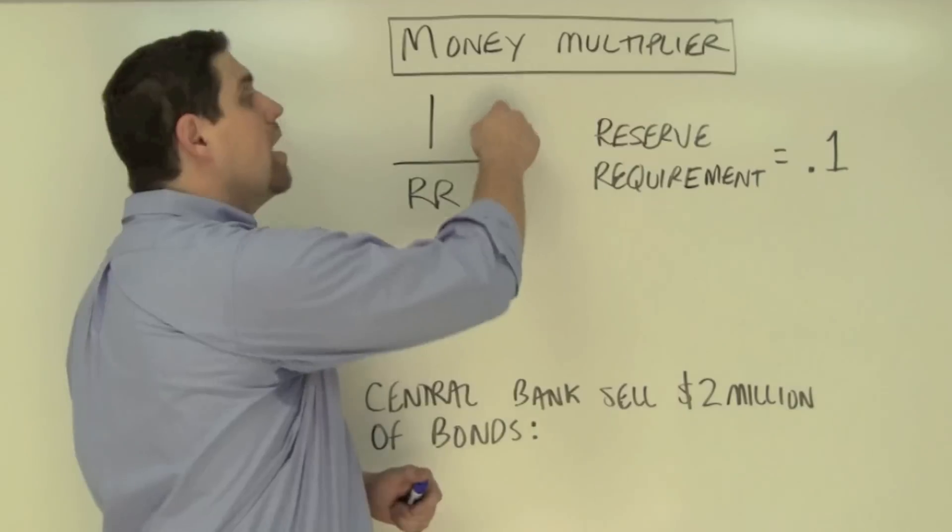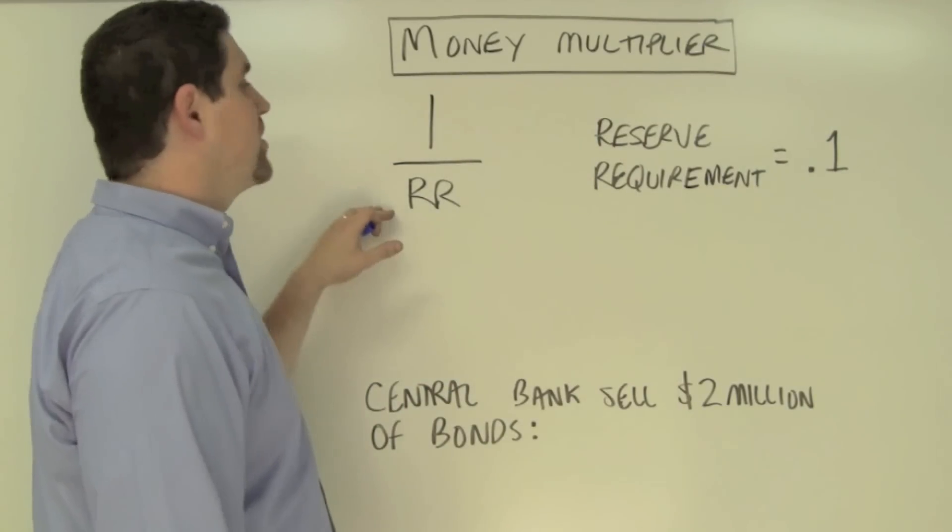The amount of money that gets created depends on the money multiplier. The equation for the money multiplier is 1 over the reserve requirement.